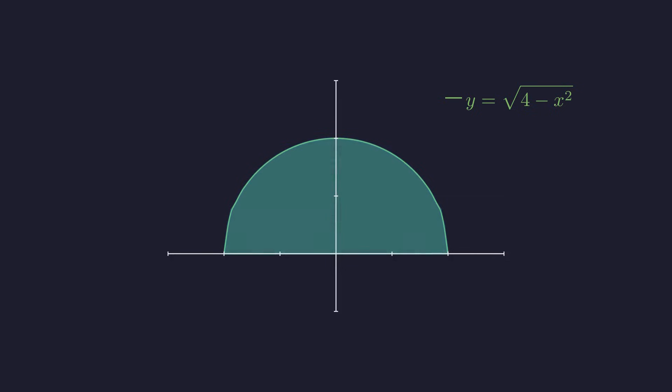Let's draw this out. What we're after is the area of the upper semicircle. Here's what the function looks like from negative two to two. The integral gives us the area of this shaded region—a semicircle with radius two.